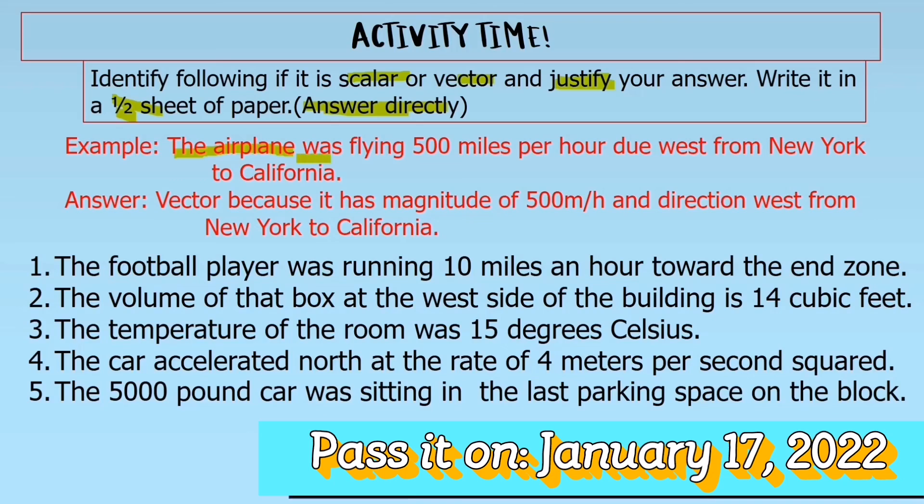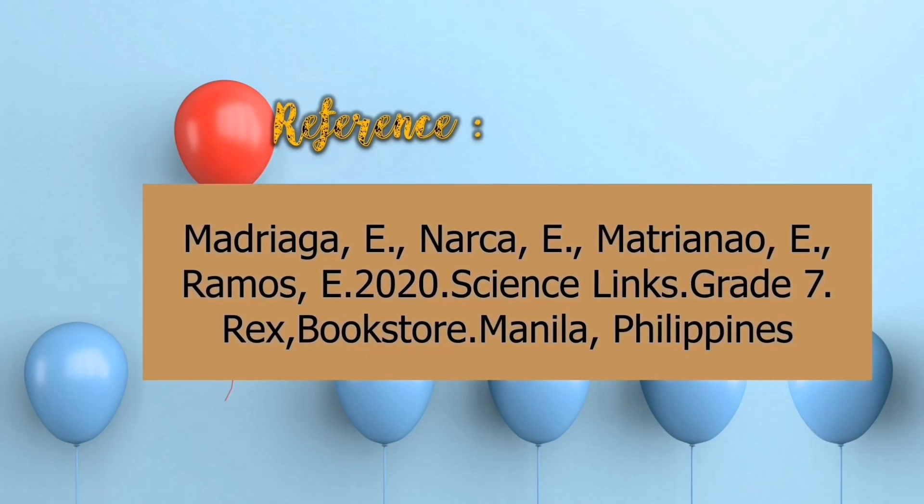For example, the airplane was flying 500 miles per hour due west from New York to California. What is the answer? It has magnitude and direction, so that is vector. Why is your answer vector? Because it has magnitude of 500 meter per hour and direction west from New York to California. That's how you will answer. State if it's vector because it has magnitude and direction. Thank you and God bless!